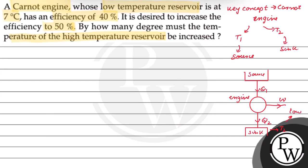The efficiency of Carnot engine is represented as eta is equal to 1 minus T2 upon T1. This means T2 sink का temperature है और T1 source का temperature है. In this question it is given that low temperature reservoir is at 7 degree Celsius मतलब 280 Kelvin पे sink का temperature है and उसकी efficiency 40% है.